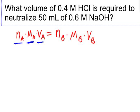Looking at our problem: what volume of 0.4 molar HCl is needed? So 0.4 molar is Ma, the molarity of the acid. HCl is the acid, and looking at the formula, it has one proton to donate, so Na equals 1.